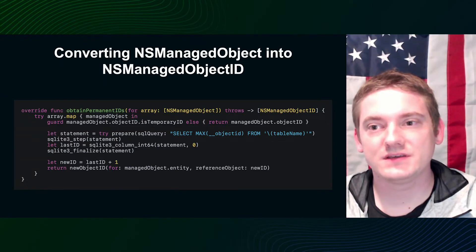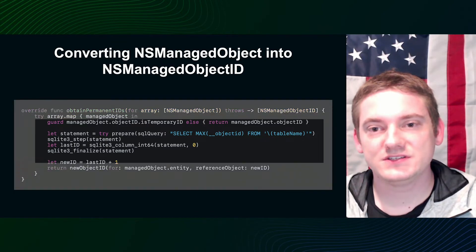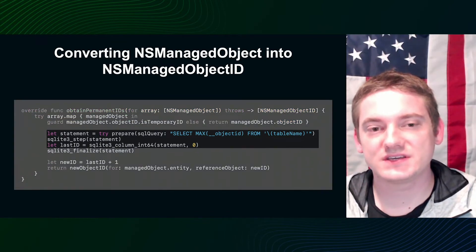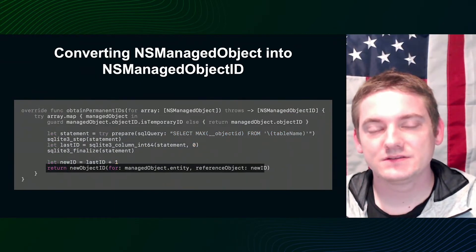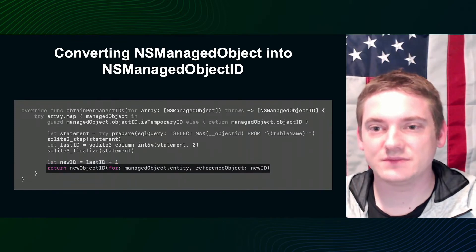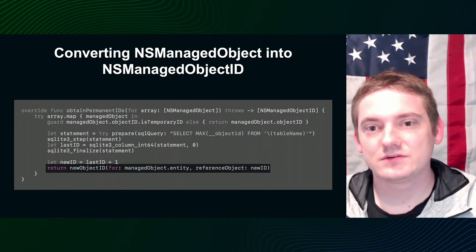After creating the database, we need to map the primary key. The most important step is to find the current maximum primary key, add one, and use it as the base ID. The newObjectID for reference object method is implemented in the superclass, so you only need to call it.